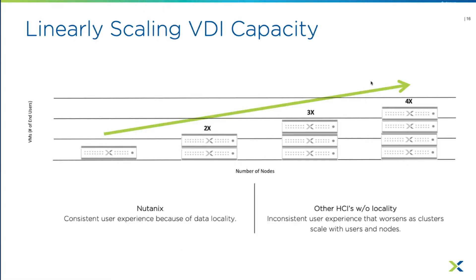To summarize the scale-out story: you stack nodes and scale out, and you'll hear similar claims from any hyper-converged vendor — they'll give you more compute and storage. The difference with Nutanix is that without locality, adding more users to a single shared image means performance degrades, whereas Nutanix reads data locally from each node, maintaining consistent user experience as you scale.